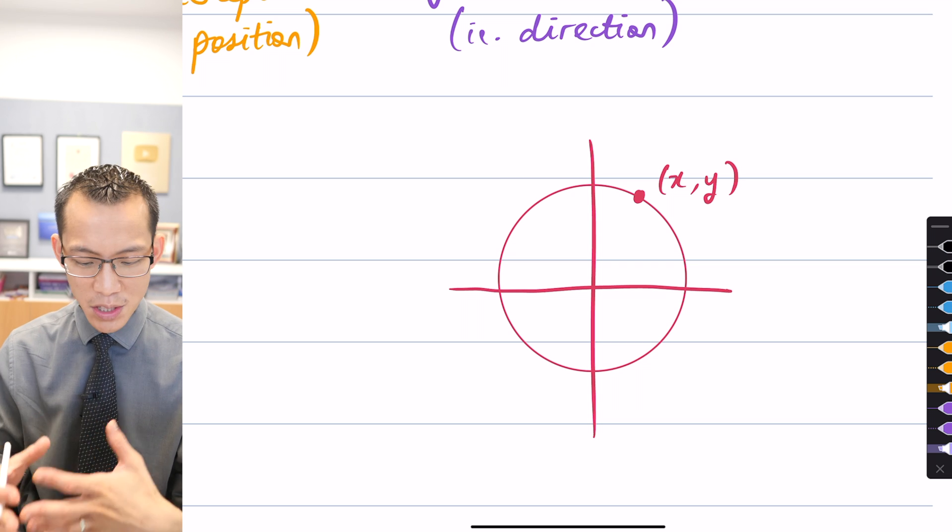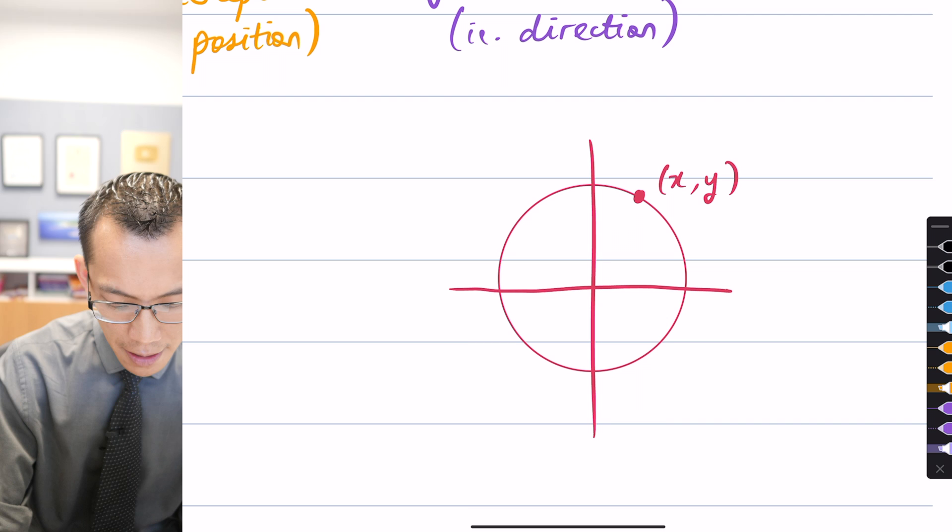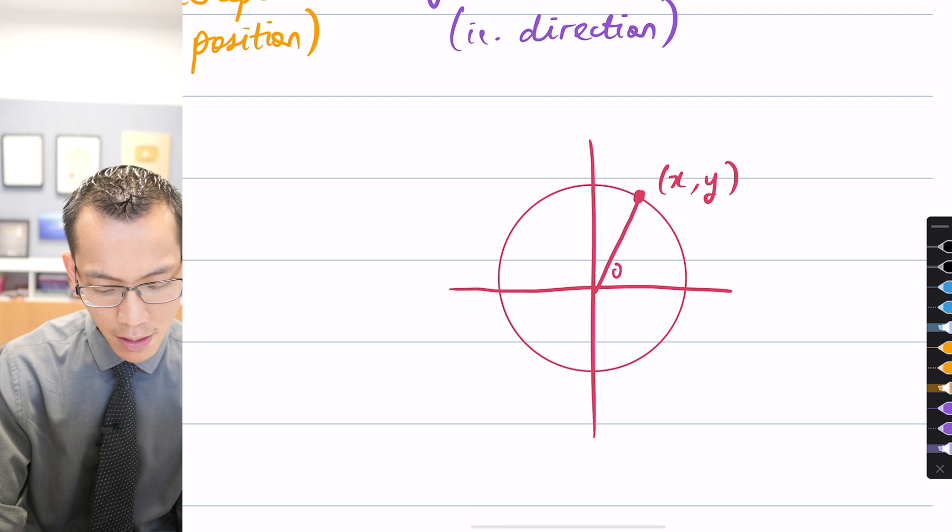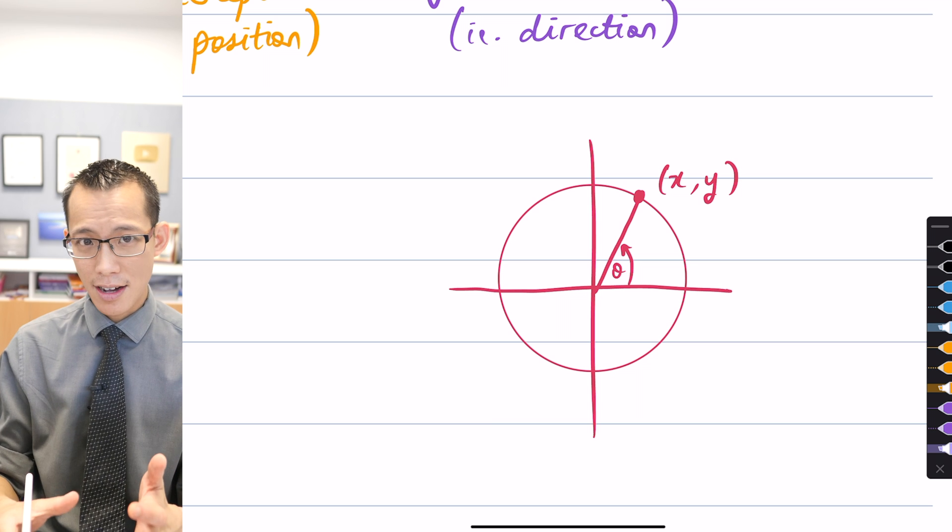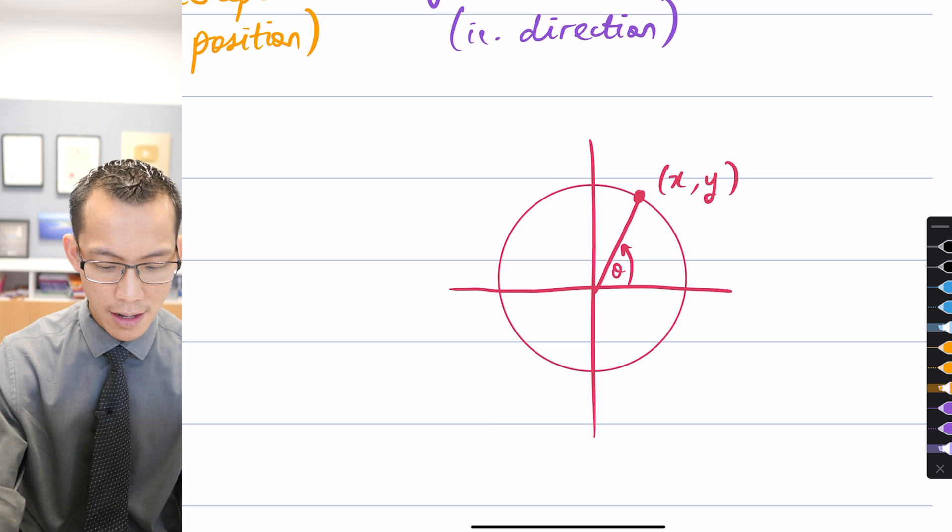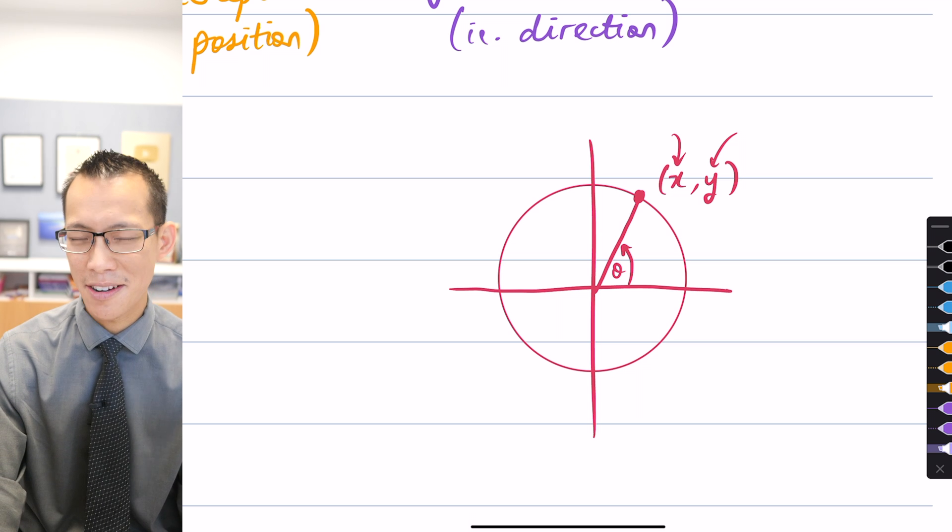You can define any point on the circumference of the unit circle with two coordinates, an x and a y. But we know we can also express the x and y in terms of the angle measured from the positive x-axis. If that angle is theta, what's the x coordinate on the circumference of the unit circle?